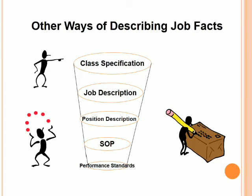Other ways of describing job facts — let's look through these ways. First: performance standards. Second: COP. Next: position description. Then: job description. Then: class specification. These are always very important in your job or in your career.